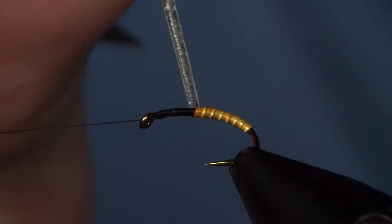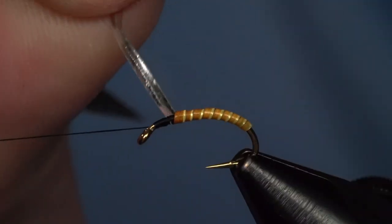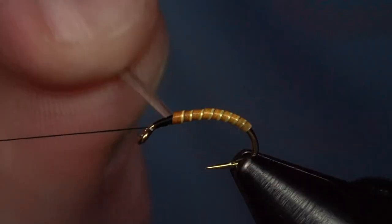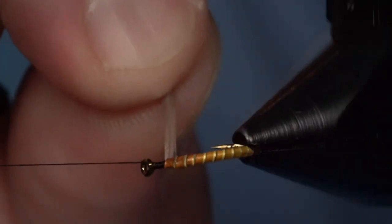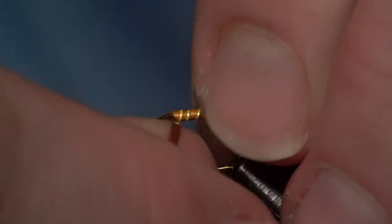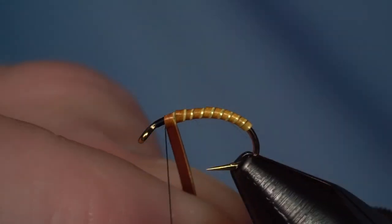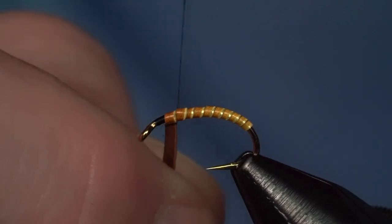...that you'd get from a natural quill, whether a Polish quill or biots. These are more durable. You can still break them if you're not careful, but you don't have to soak them or moisten them to get them less stiff like natural materials. That's one of the great reasons for using these.